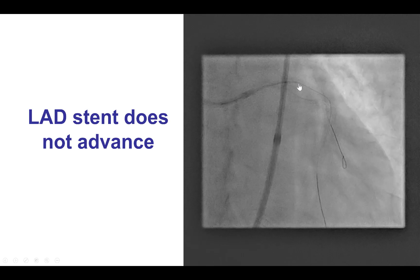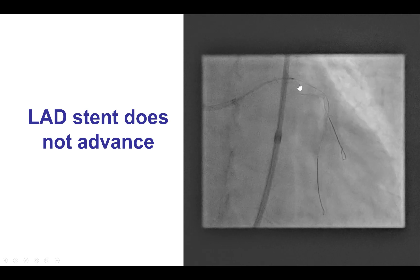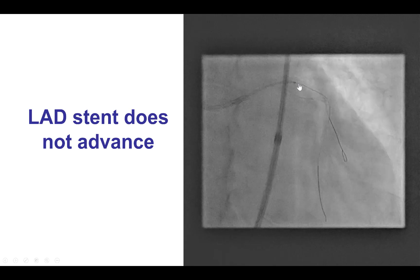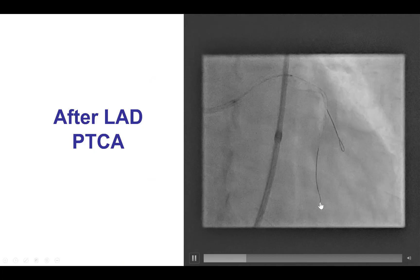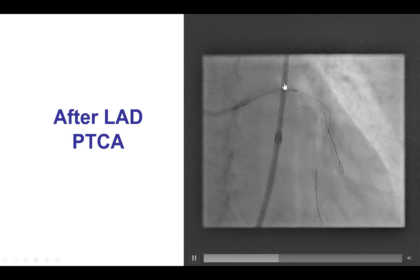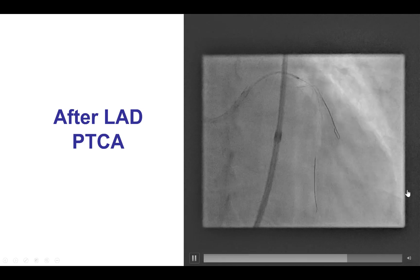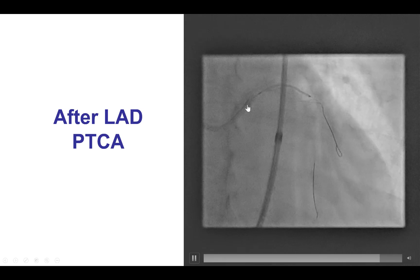The next step is to advance the stent into the main vessel, but we had difficulty again. We had not prepared the vessel very well. Options include upsizing the guide — though that risks losing wire position — changing the wire, preparing the vessel more, using a different more deliverable stent, or using techniques such as deep breath, ViperGlide, or RotaGlide. We performed additional balloon angioplasty of the LAD and were then able to successfully advance the stent into the LAD and back into the left main.